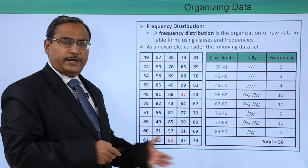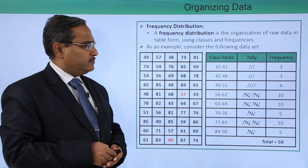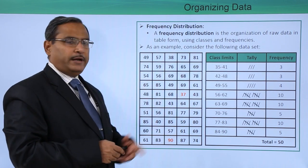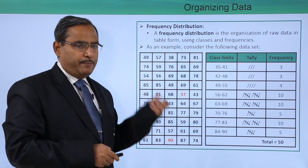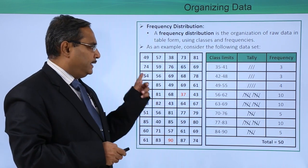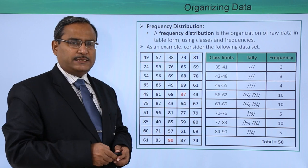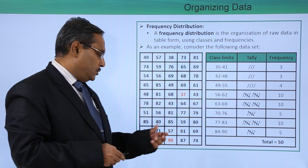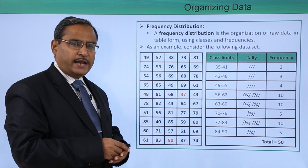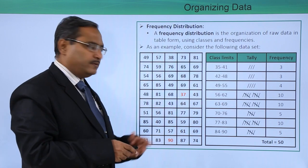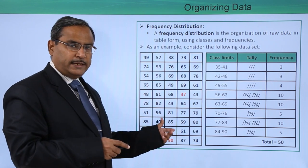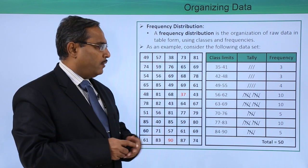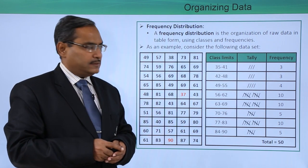Here we are having a set of data. At first, we are trying to find out the minimum data. I have marked the minimum one here, and then we should find out the maximum data in this range. I have marked this 90 because 90 is the maximum data here. Now, we have decided that we shall represent this data in tabular form in 8 different classes.